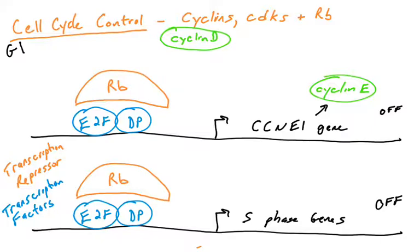In G1 phase, the CCNE1 gene is kept off — it is repressed by the RB transcriptional repressor at the promoter level. We have two proteins: cyclin E and cyclin D. They are both cyclin proteins, members of the cyclin family. There are other cyclins — cyclin B, cyclin A — but we're just going to focus on D and E here.